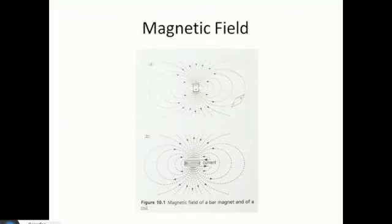The projector doesn't make it so clear, but you should know that this is a bar magnet. This is the field that you would expect — coming out of the positive, coming into the negative, and then the circular field lines.